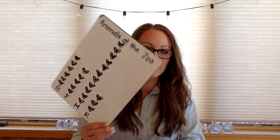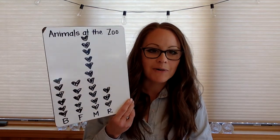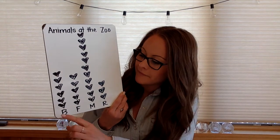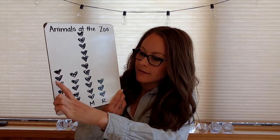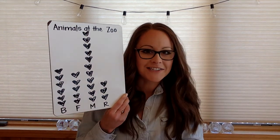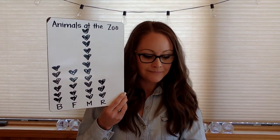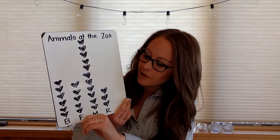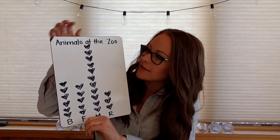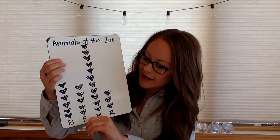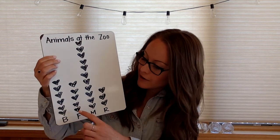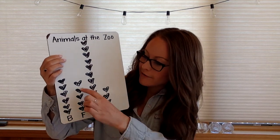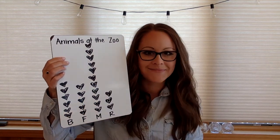I see that there are six birds, so I made six hearts for birds. The next one is fish — I saw that there were five fish, so I made one, two, three, four, five. And remember, if I'm ever going too fast, you can just pause it and unpause when you're ready.